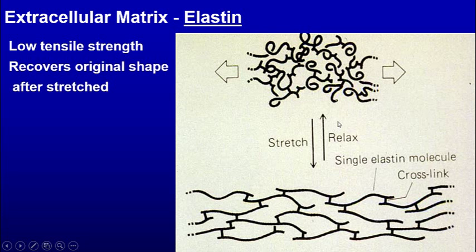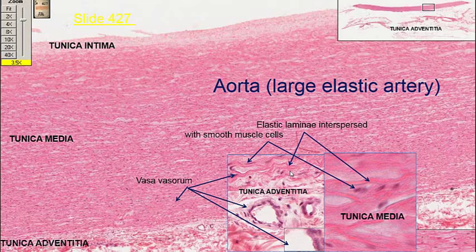Another extracellular matrix component is elastin, which allows tissue to stretch and then relax back to its original shape. The aorta is one example, and we can see the elastic fibers there.